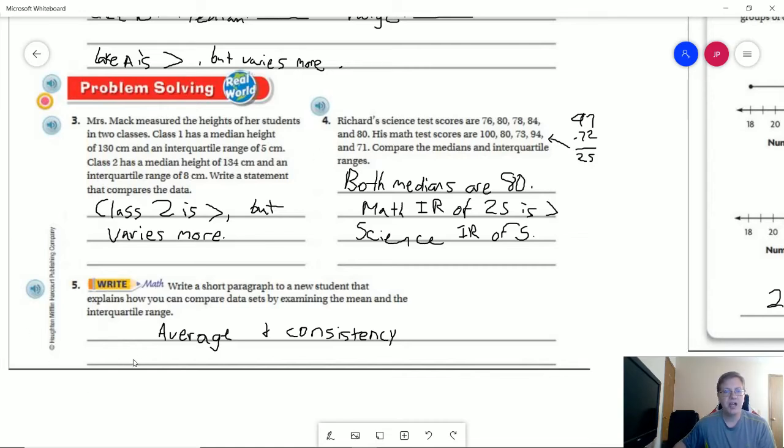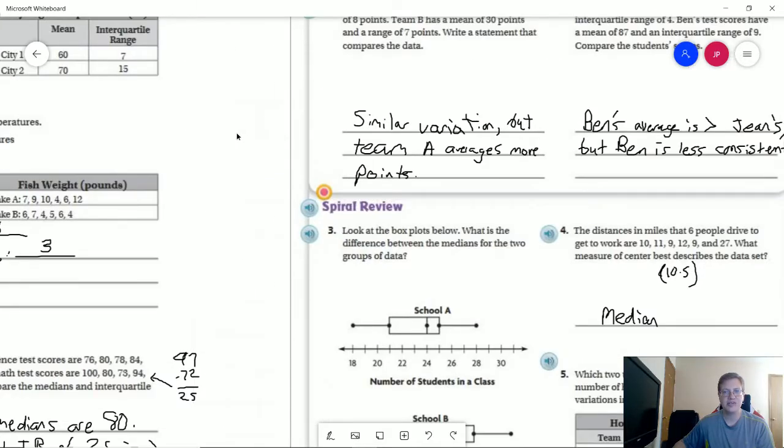And so for number five, the two things that I would say you want to mention in the short explanation is talking about finding an average or a way of finding the center and then talking about consistency when we're looking at either our range or interquartile range. So if you've talked about both of those things and how we're going to be looking at that, that would be an acceptable answer.